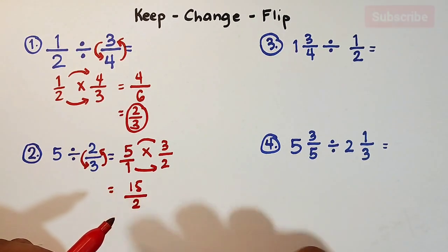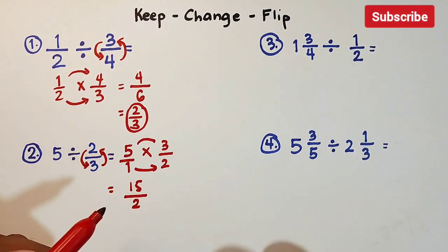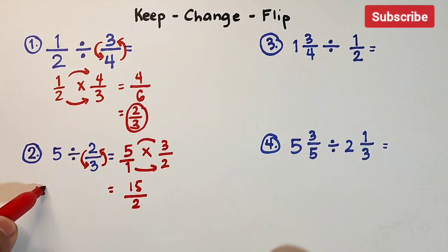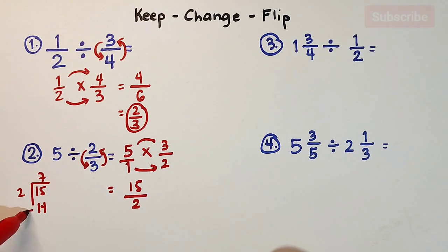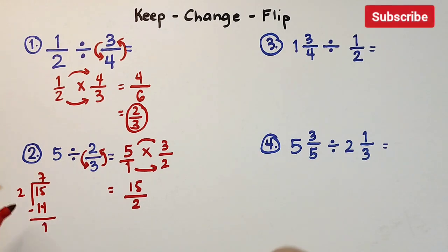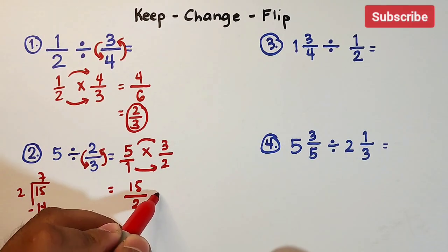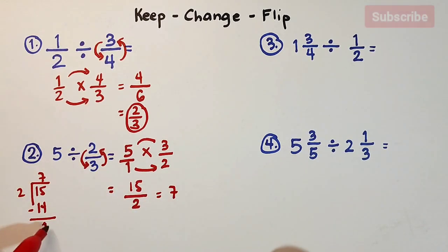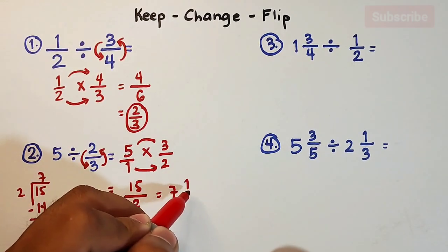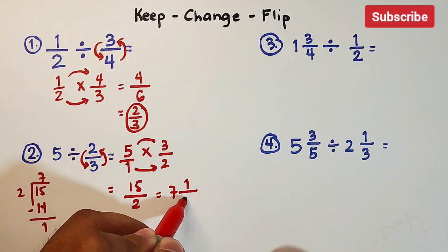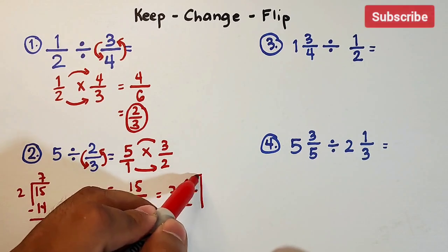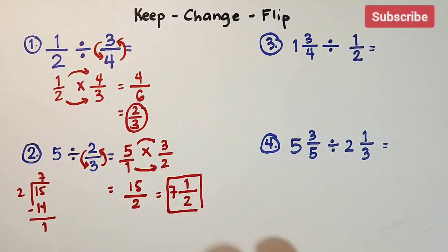Now express 15 over 2 as a mixed number. 15 divided by 2 is 7, and 7 times 2 is 14. Subtract — the remainder is 1. So the quotient is 7, and the remainder 1 serves as the numerator over the original denominator 2. The final answer for item number 2 is 7 and one-half.